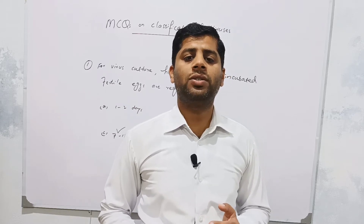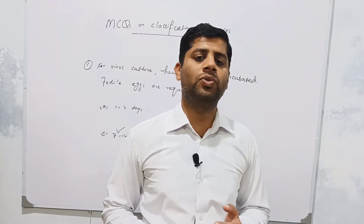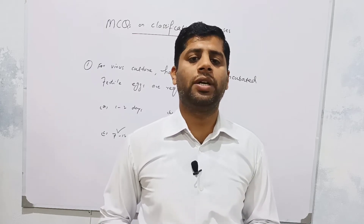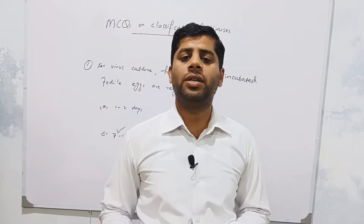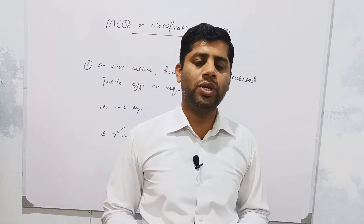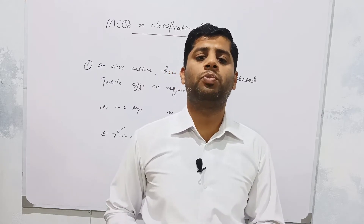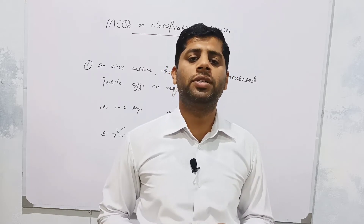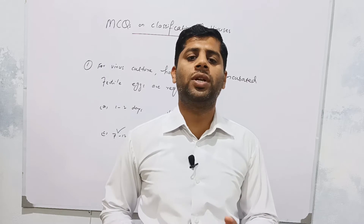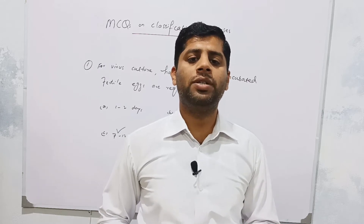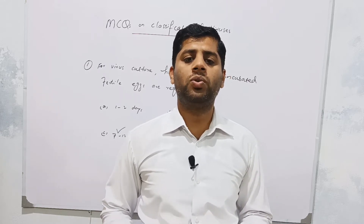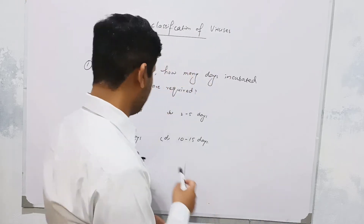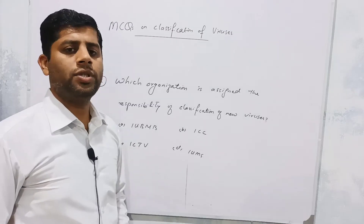After incubation, the eggs mitotically divide to form a zygote and embryo — these are called embryonated chick eggs. The viruses are inoculated aseptically through the shell into the egg, then the viruses start proliferation. These eggs are incubated again at 36 degrees centigrade for two to three days. The viruses multiply, and then the eggs are broken down to isolate and collect the grown viruses. So the correct answer is 7 to 12 days.